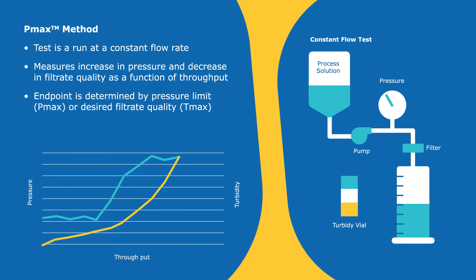So now that you've collected all of your data, we'll just do a quick recap of the PMAX method. This is a test that's run at a constant flow rate. You're running your process solution through the pump, through your filter, and the data shows that you're measuring an increase in pressure and a decrease, potentially, in filtrate quality as a function of throughput. The endpoint of your test is typically determined by a maximum pressure limit, which would be PMAX, or a desired filtrate quality that you would measure with turbidity, which is TMAX.